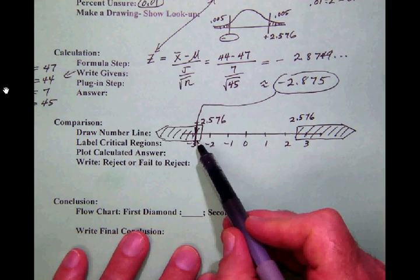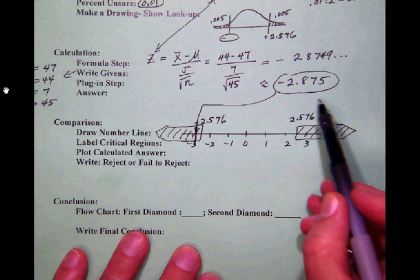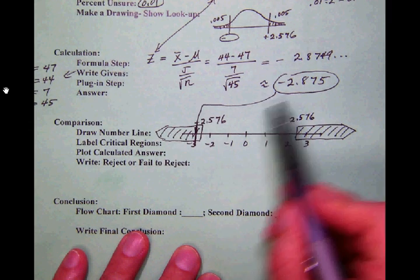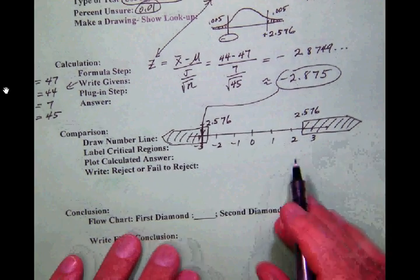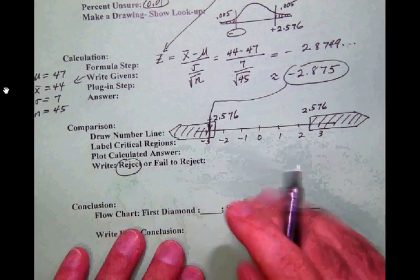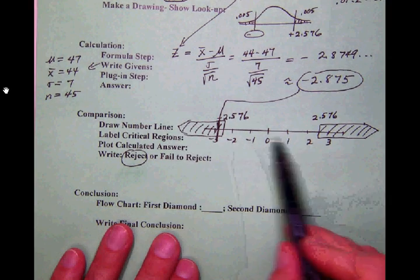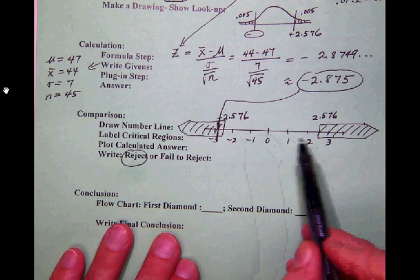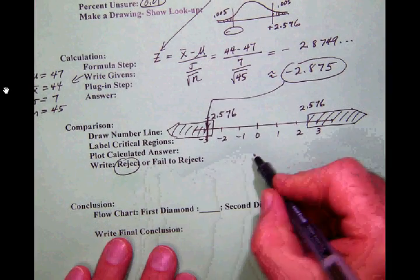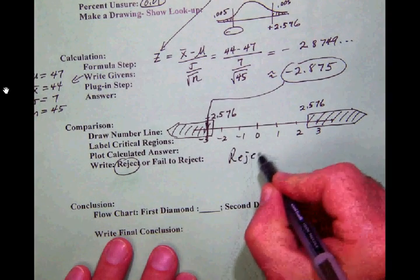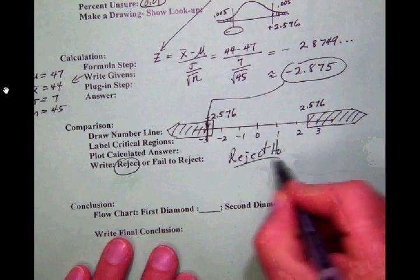So if in a traditional test your calculated value, the test statistic, falls inside of one of these rejection zones then you in fact reject the null hypothesis. If it should fall in this safe zone in here then we would fail to reject but we are going to reject our null hypothesis here. We're rejecting H0.